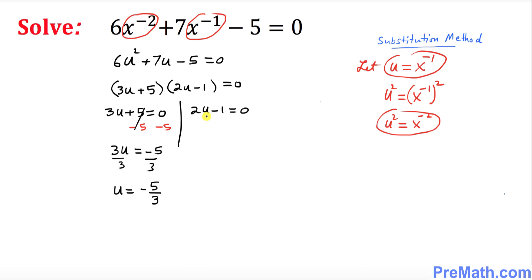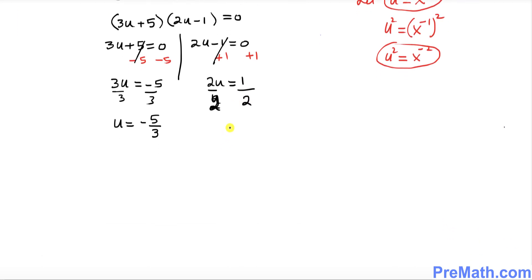Now we're going to take care of u on this side. So I'm going to add 1 on this side over here. This cancels out negative 1, so we got 2u equals to 1. Divide it by 2 on both sides, so u turns out to be equal to 1 over 2.